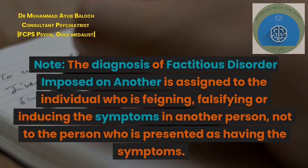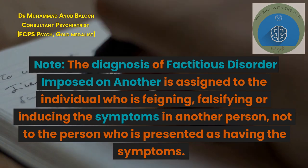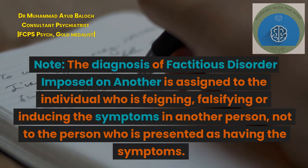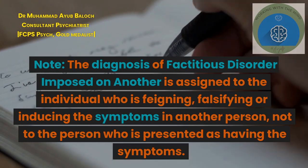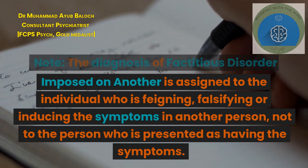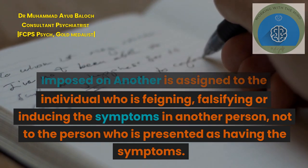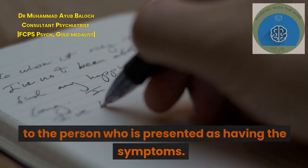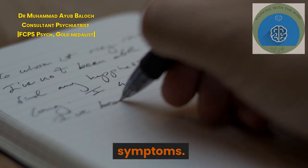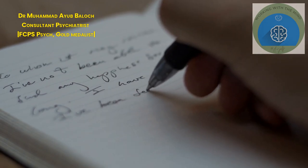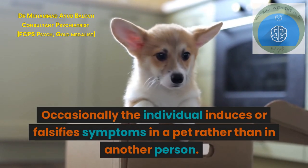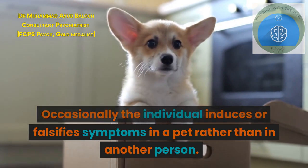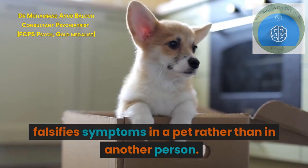Note: The diagnosis of factitious disorder imposed on another is assigned to the individual who is feigning, falsifying, or inducing the symptoms in another person, not to the person who is presented as having the symptoms. Occasionally the individual induces or falsifies symptoms in a pet rather than in another person.